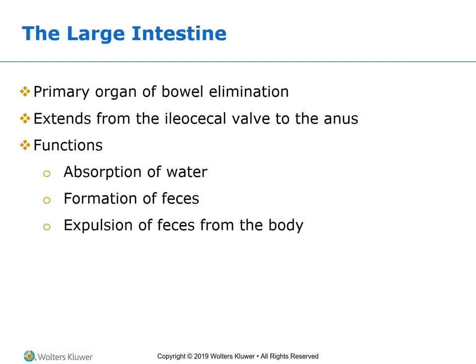The GI tract, also referred to as the alimentary tract or canal, goes from the mouth to the anus — that is considered the outlet for the GI tract. The large intestine connects the ileum to the small intestine via the ileocecal valve, which helps prevent contents from entering the large intestine too soon and prevents waste from going back into the small intestine. It is the primary organ for bowel elimination, located in the lower or distal part of the GI tract, and is also referred to as the colon, extending from the ileocecal valve to the anus.